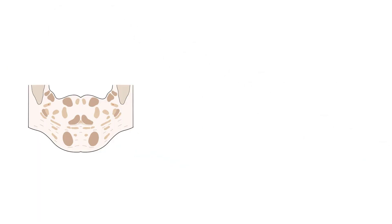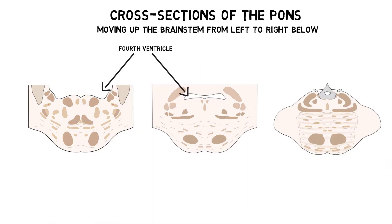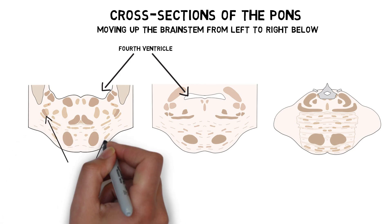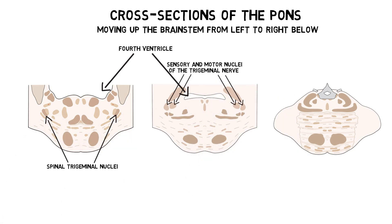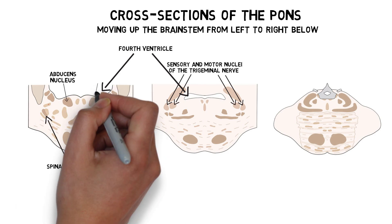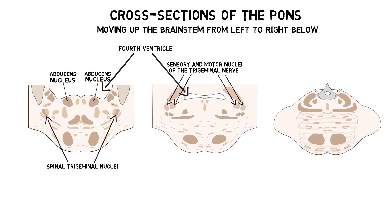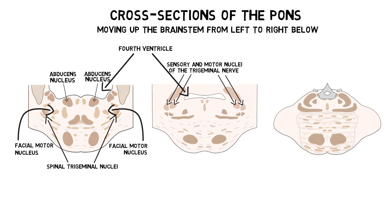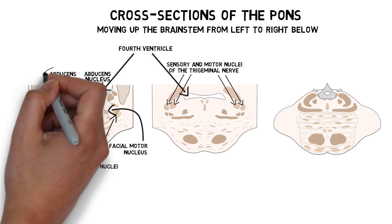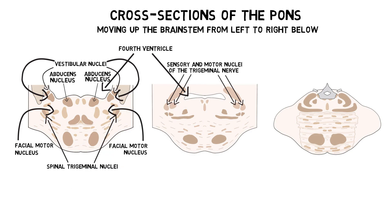The pons forms most of the floor of the fourth ventricle and is home to several cranial nerve nuclei, including the trigeminal nuclei, which are involved with sensory and motor functions of the head and face; the abducens nucleus, which controls lateral movements of the eye; the facial motor nucleus, which controls muscles of facial expression; and the vestibular nuclei, which process vestibular information.